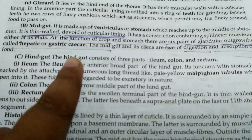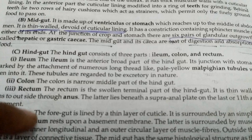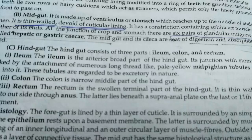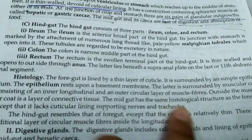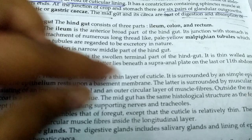The lining of midgut secretes gastric juices to digest the food. Hindgut is composed of ileum, colon, and rectum, and the rectum leads into the anus. Malpighian tubules are present at the junction of midgut and hindgut. They are freely submerged in the blood of the grasshopper. They take waste materials from the blood and send them to the hindgut for excretion.